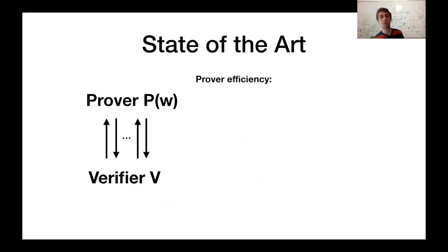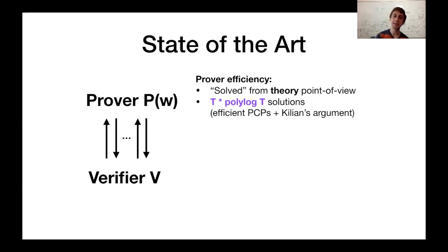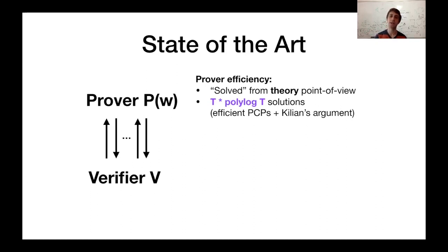I want to emphasize I'm considering the general NP regime where there's just an arbitrary prover with some witness interacting possibly over many rounds with the verifier. In this setting, what we know for prover efficiency: well, it seems it's been solved, at least from a theory point of view. We have solutions which are essentially t times some polylog t factor for the overhead of computing a proof. At a high level, these follow from efficient constructions of PCPs — essentially long strings which, even in the efficient case, have size t times polylog t, but the verifier can efficiently check these proofs. These can be compiled into succinct arguments using collision resistance and general cryptographic techniques, known as Kilian's argument.